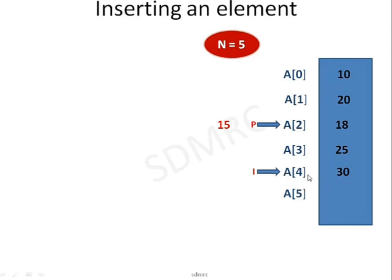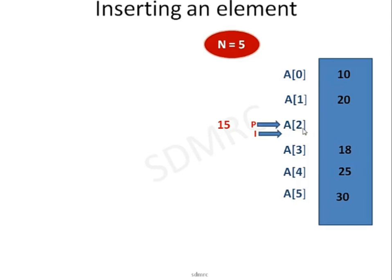Let me begin with this value. When i is equal to 4, a[5] is equal to a[4]. When i goes to 3, a[3+1], that is a[4], is equal to a[3]. When i goes to p, a[2+1], that is a[3], is equal to a[2]. In all these iterations, what I did is a[i+1] is equal to a[i].